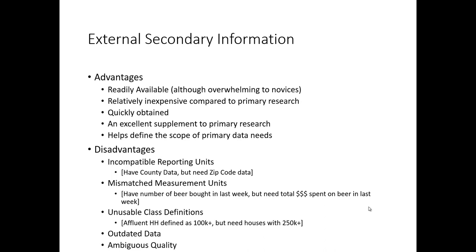Finally, external secondary information is, by definition, collected by someone else — not you. Therefore, the quality of their research may be ambiguous. You'll have to look very closely to figure out whether the way they conducted the research is of sufficient quality that you can trust these results for your particular research question.